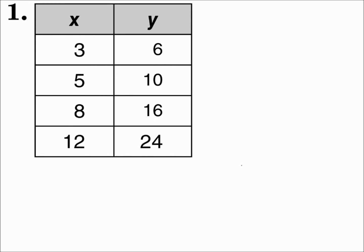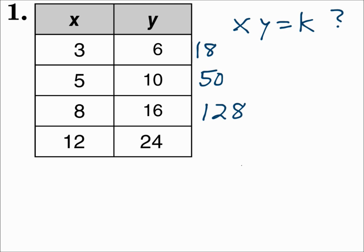Number one is a table. Let's see if it works with inverse variation — for inverse variation, x times y equals k, and k must be the same each time. 3×6=18, 5×10=50, 8×16=128, and 12×24=288. That was different each time, not the same. So this is not inverse variation; those products would need to be the same each time.